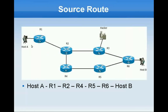Source routing is an IP option that allows host A to specify the path the packet will take. For example, in this path the packet will traverse through R4, R5, and R6 instead of going through R2, R3, and R6. So our path is going through here instead of going through here.